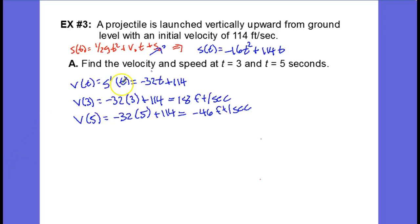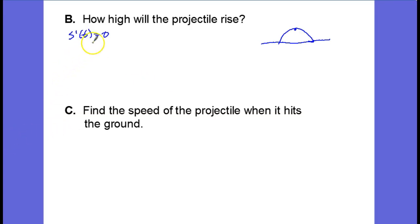Looking back at our previous work, s prime of t was negative 32t plus 114, so negative 32t plus 114 equals zero. That means that 32t equals 114, and so t equals 114 over 32.